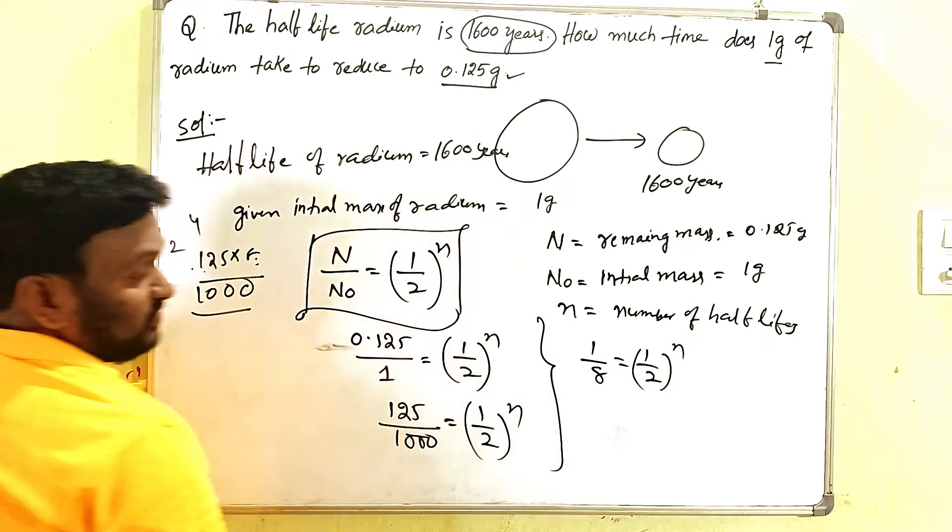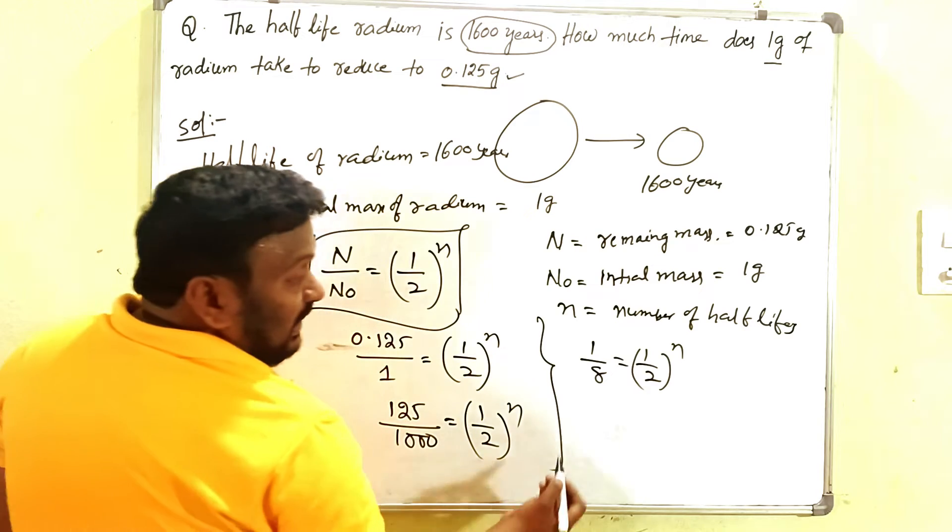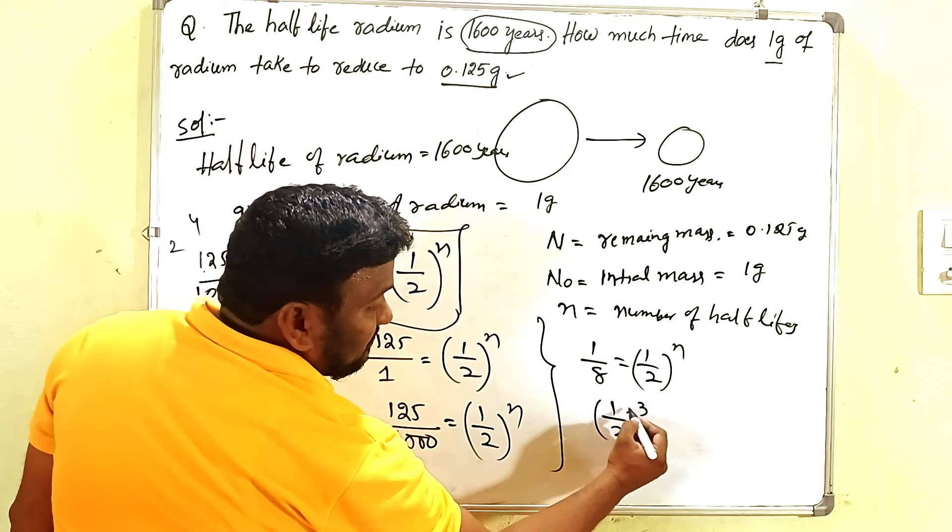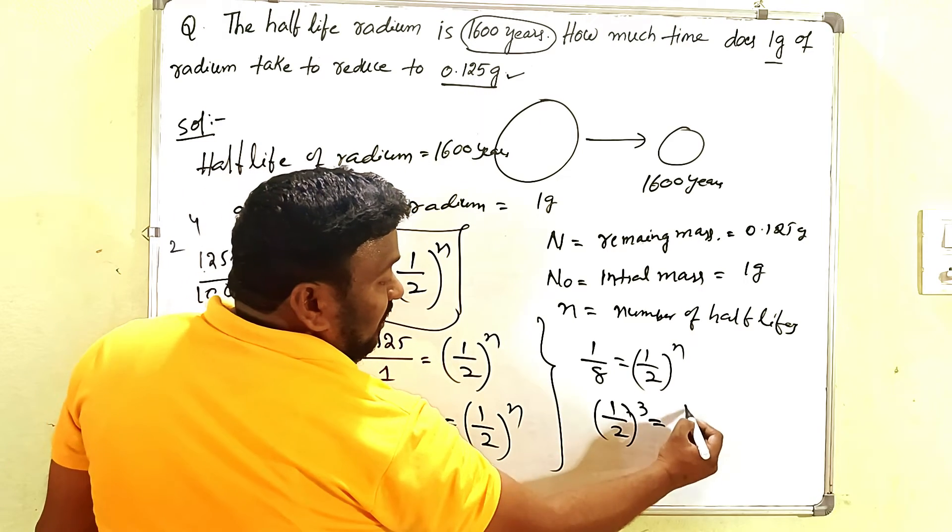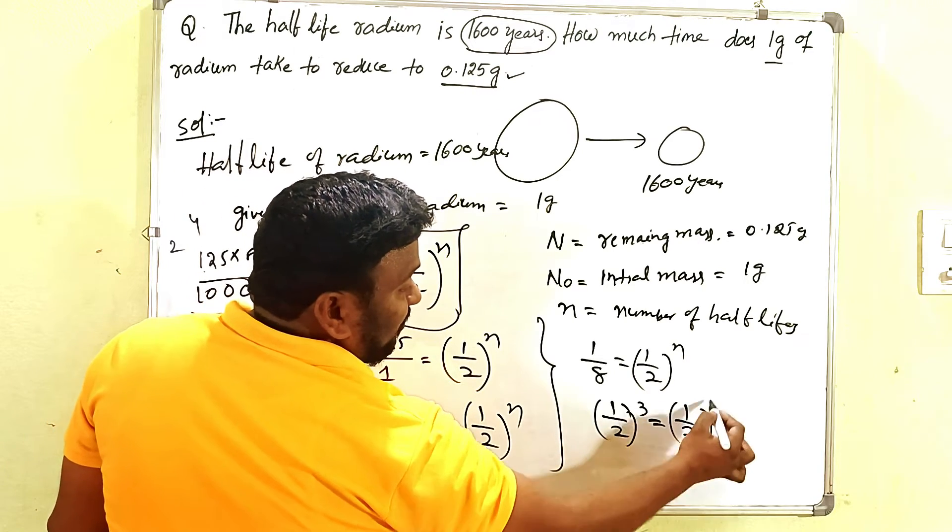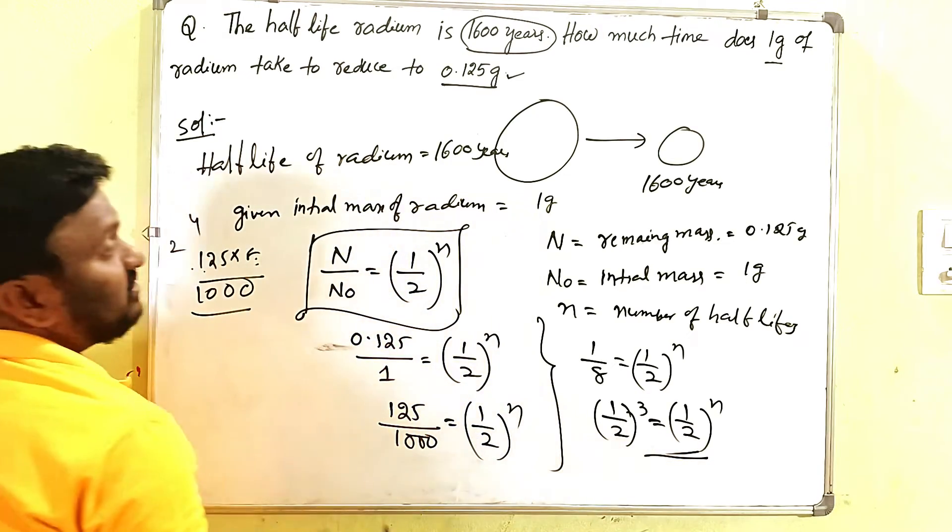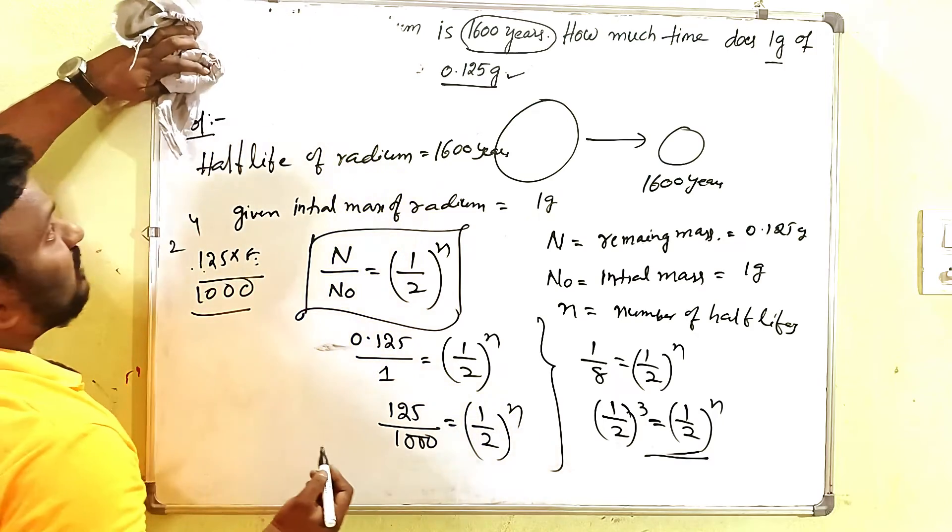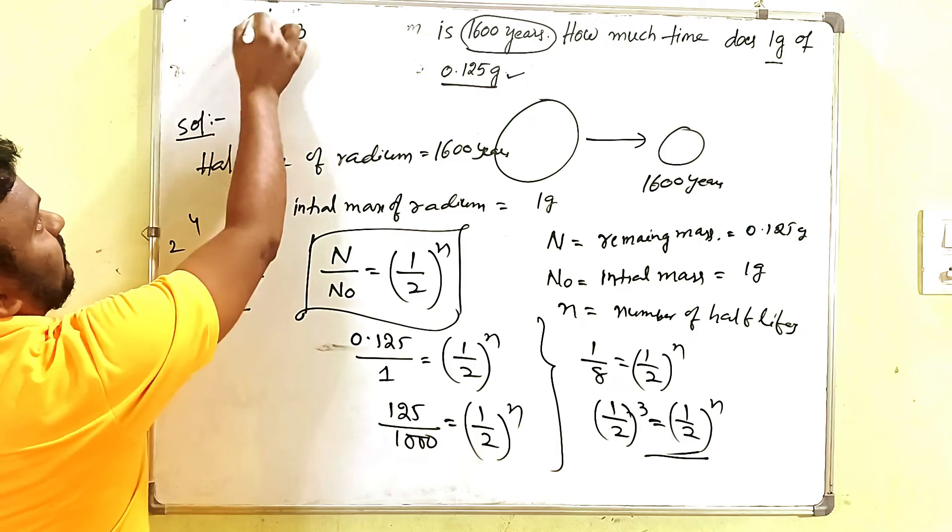So that's why here it should be written as now 1 by 8 equals 1 by 2 to the power n. Comparing the powers, what you have to write here? Simply, n is equal to 3.